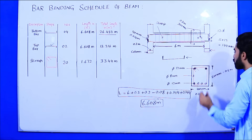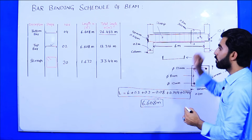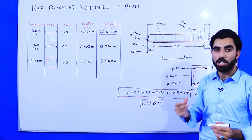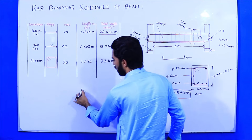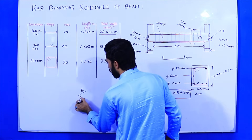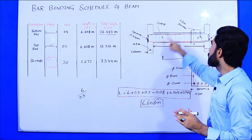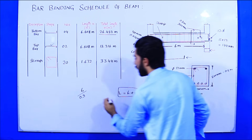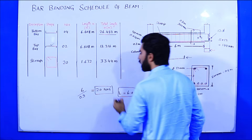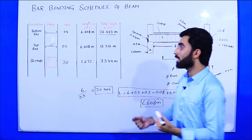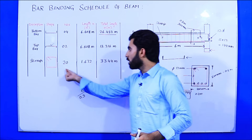Now we find the steel length for the stirrups. First, how many numbers of stirrups are required? The total beam length is 6 meters. So 6 meters divided by 0.3 meter spacing equals 20 numbers of stirrups required. The shape of the stirrup is a closed rectangular hoop.